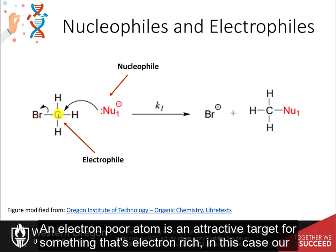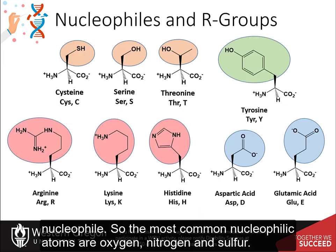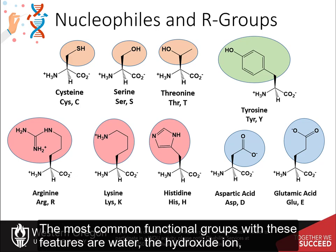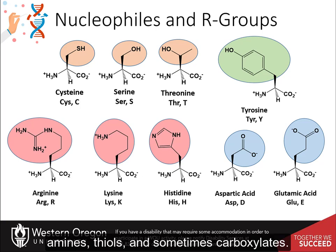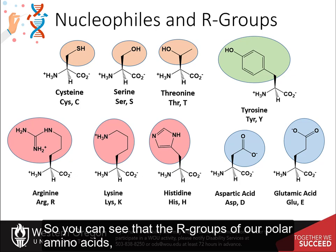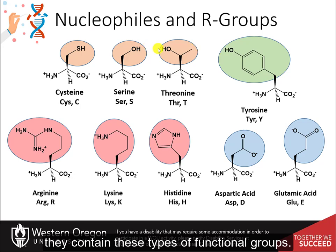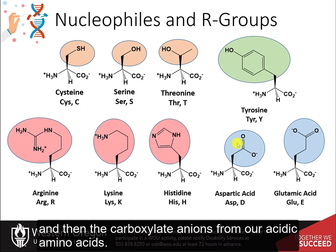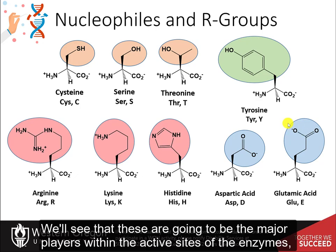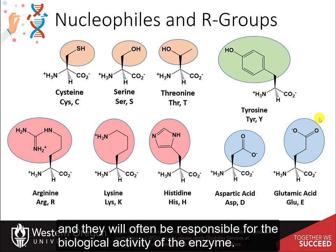An electron-poor atom is an attractive target for something that is electron-rich — our nucleophile. The most common nucleophilic atoms are oxygen, nitrogen, and sulfur. The most common functional groups with these features are water, the hydroxide ion, alcohols, phenols, amines, thiols, and sometimes carboxylates. The R groups of polar amino acids contain these functional groups — alcohols, thiols, amines from basic residues, and carboxylate anions from acidic amino acids — and these will be the major players within active sites of enzymes.